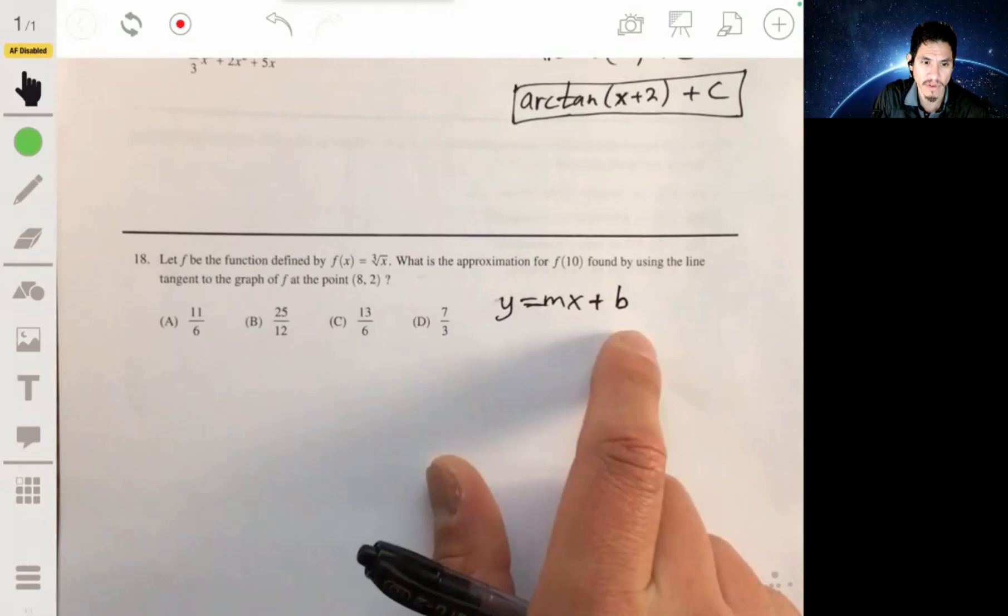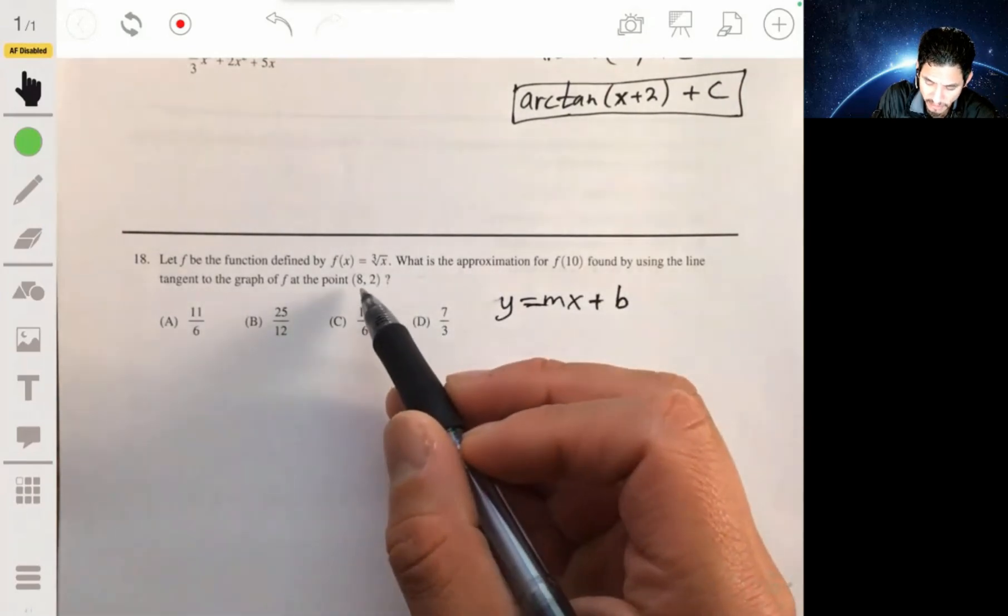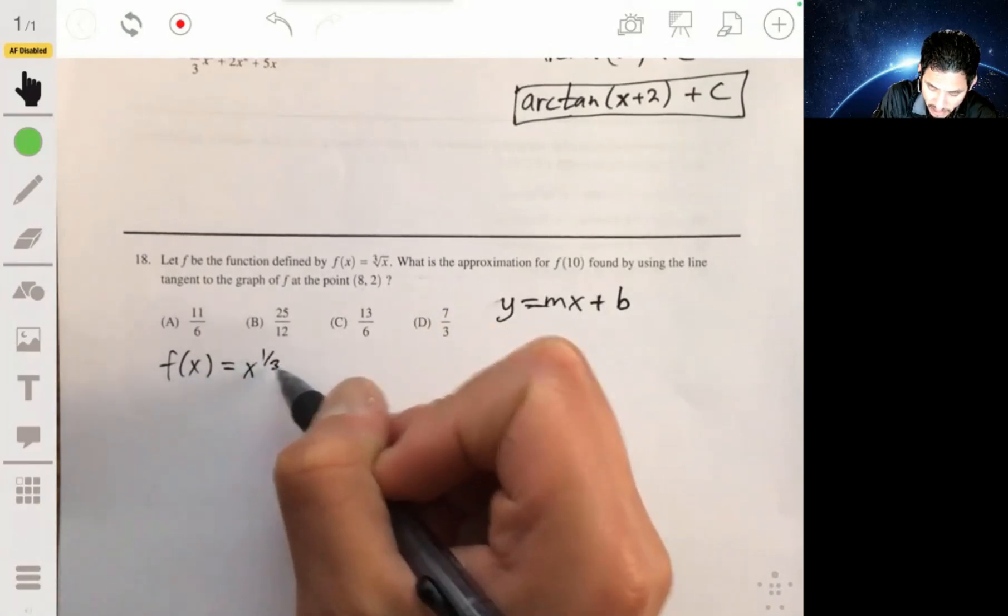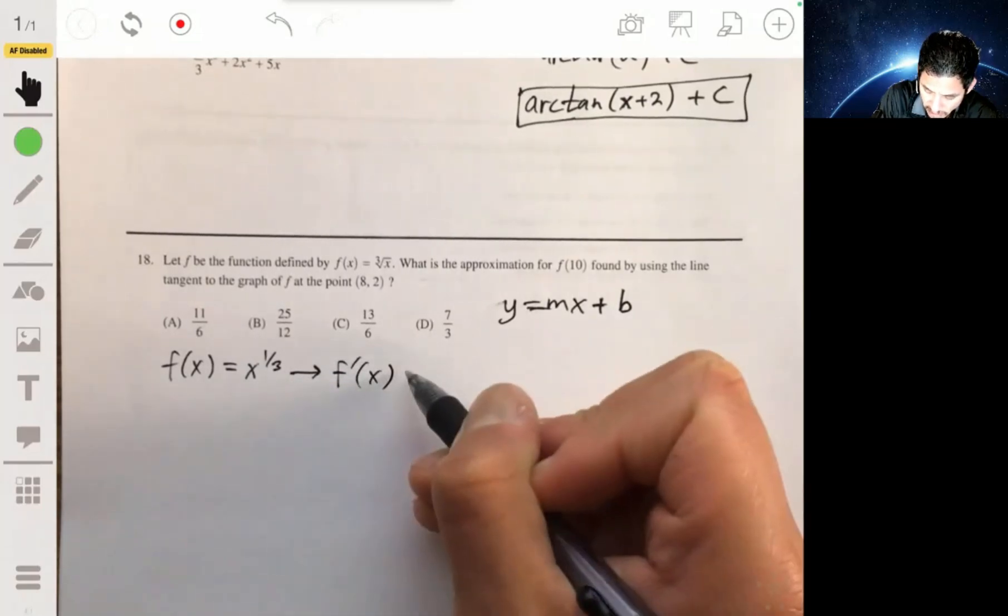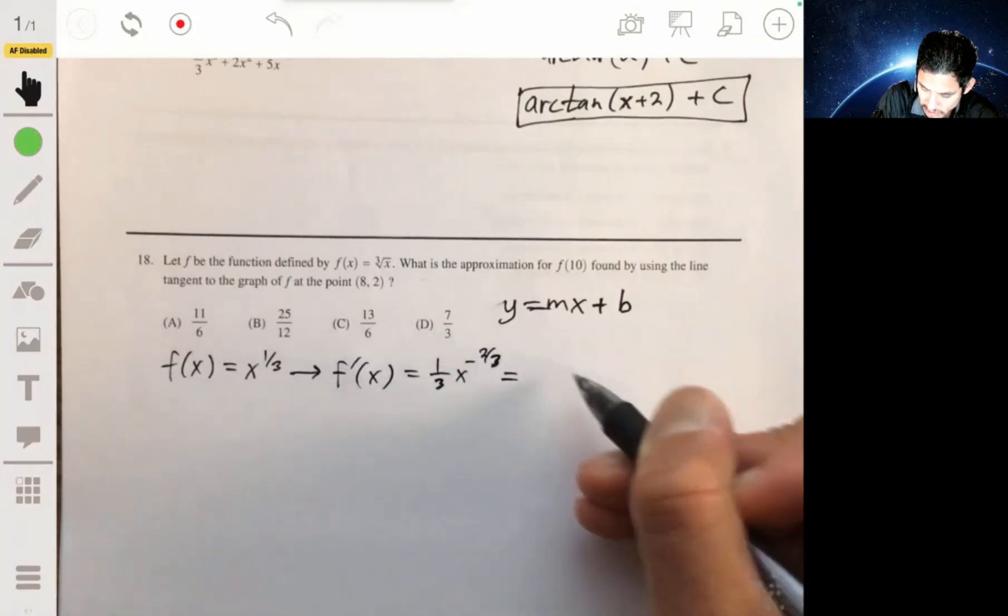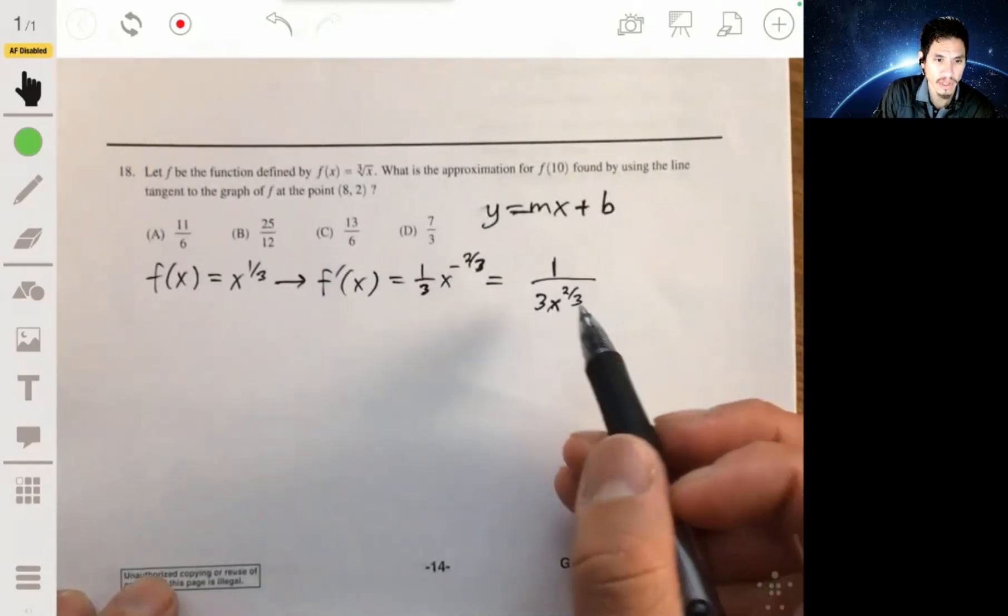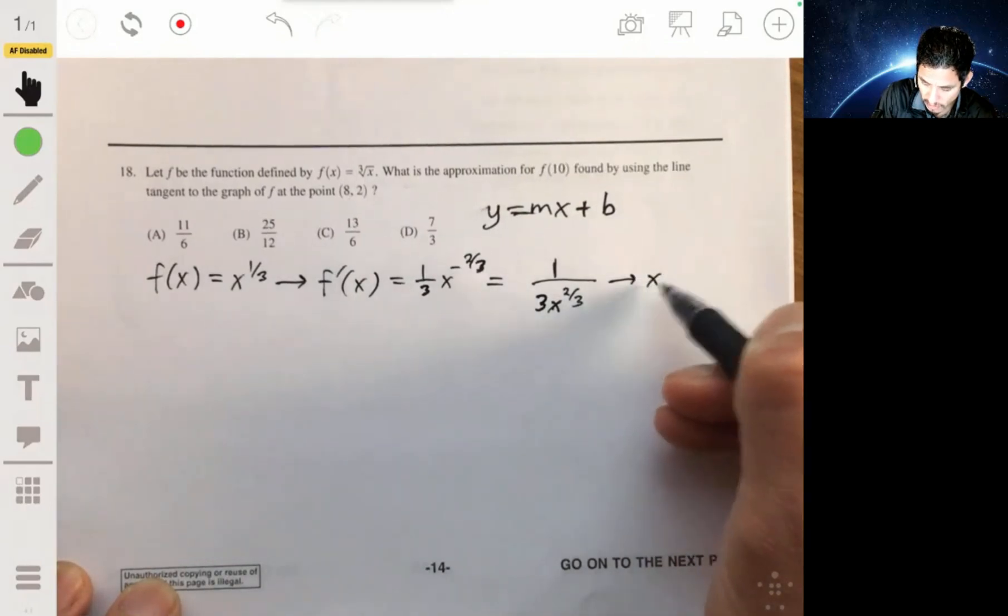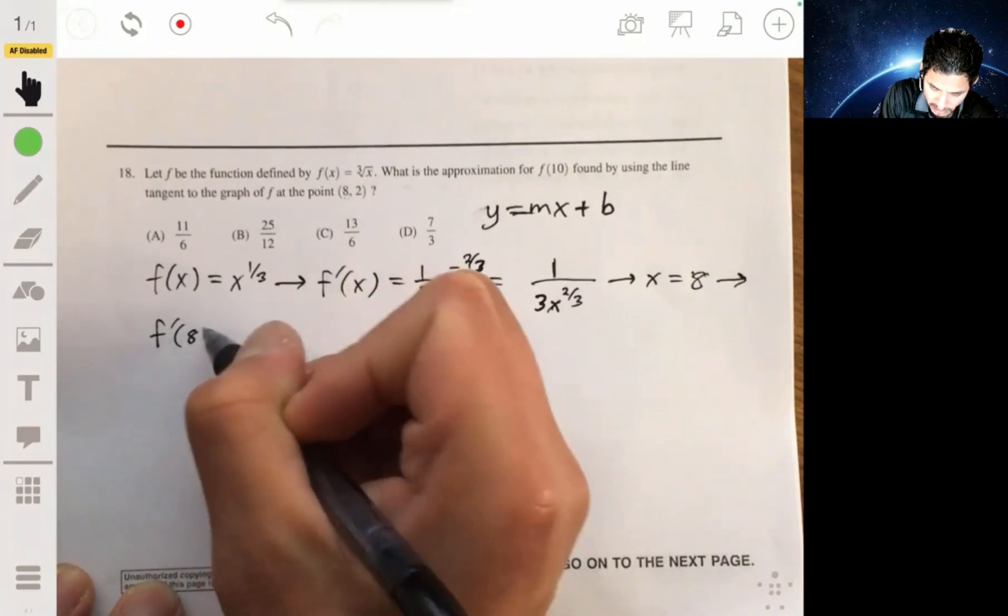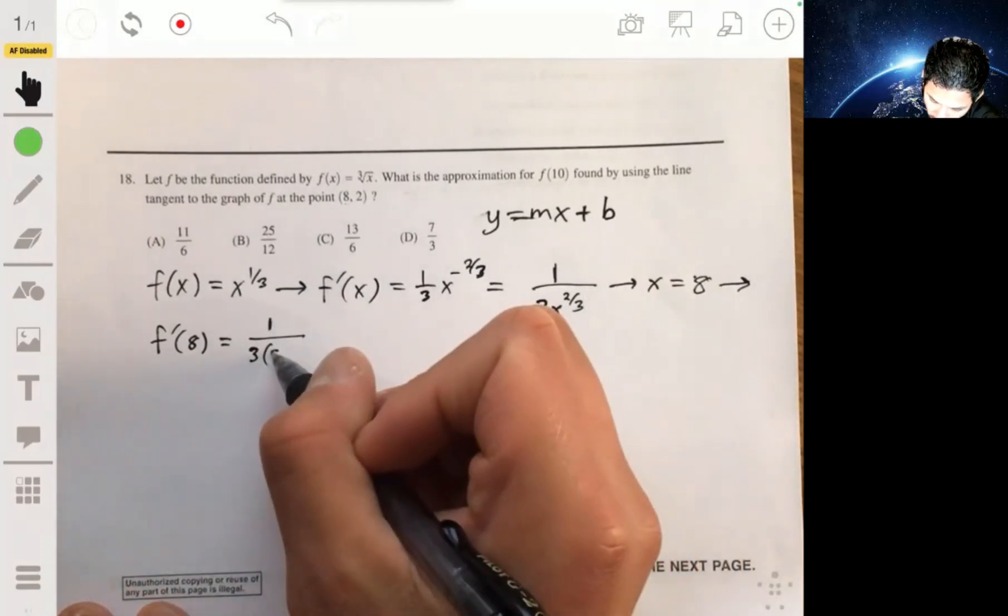So we got to find the value of the slope and the value of the y-intercept. Remember the value of the slope, it will be the derivative at that point, at the point 8. So let's first find the derivative. Remember this is the same as x to the 1/3 power. So the derivative would be 1/3 x to the negative 2/3 or just 1 over 3x to the 2/3. Now when x is 8, so f prime of 8 will be equal to 1 over 8 to the 2/3 power.